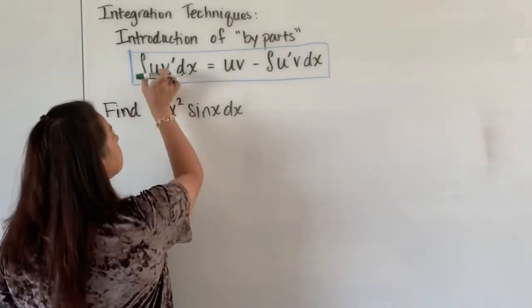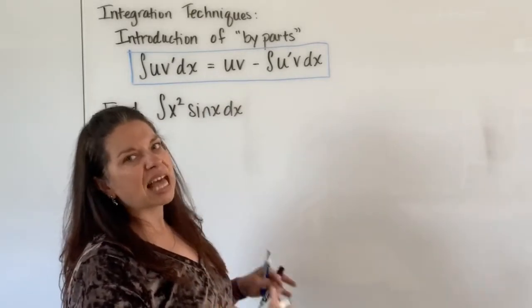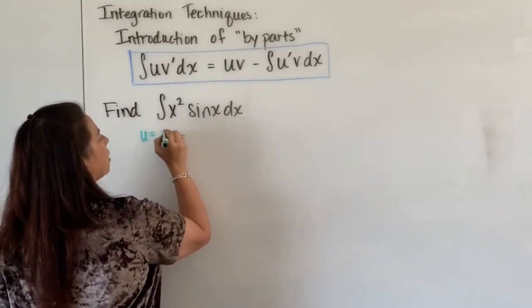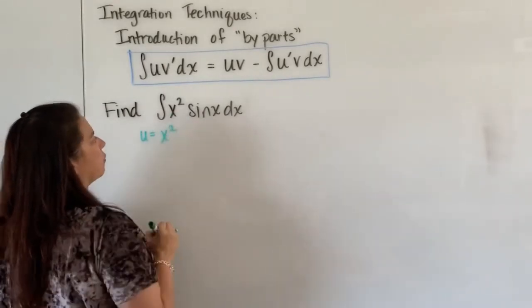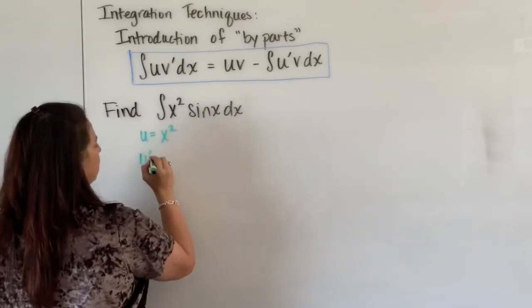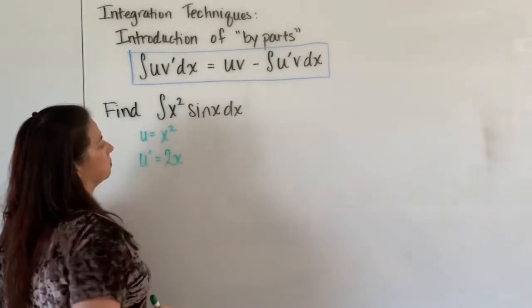We're going to keep consistent with what we did previously where the first function given, let's let that be the u. So we have u is equal to x squared, that's the first function, and we are going to find the derivative of that u, so u prime, that will be 2x.